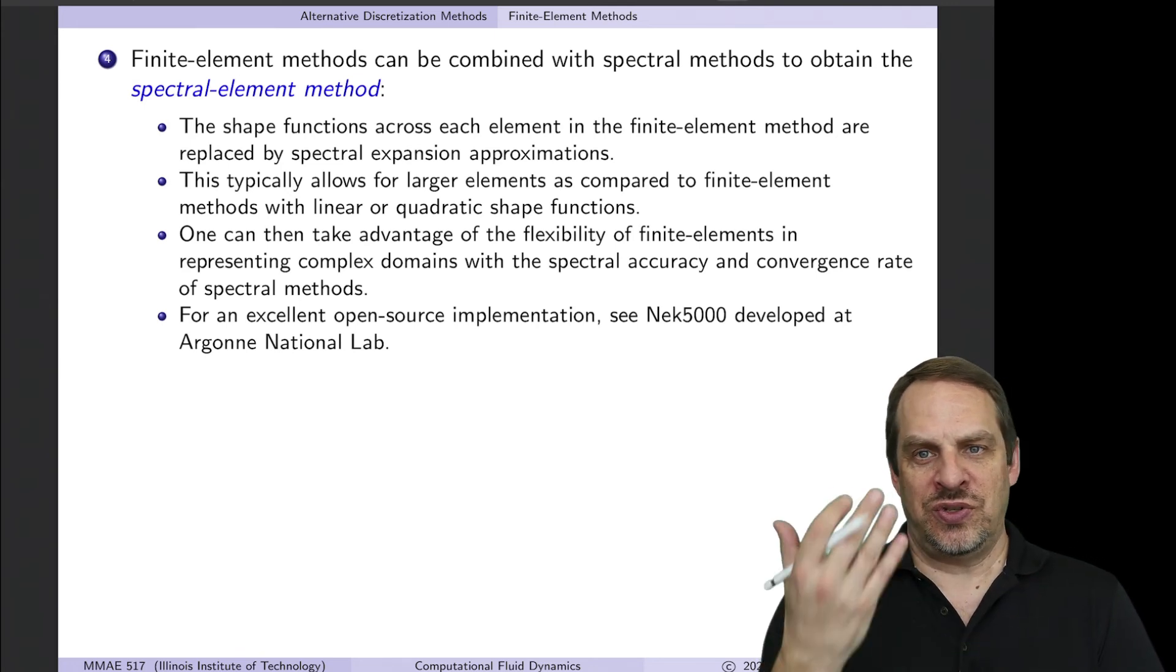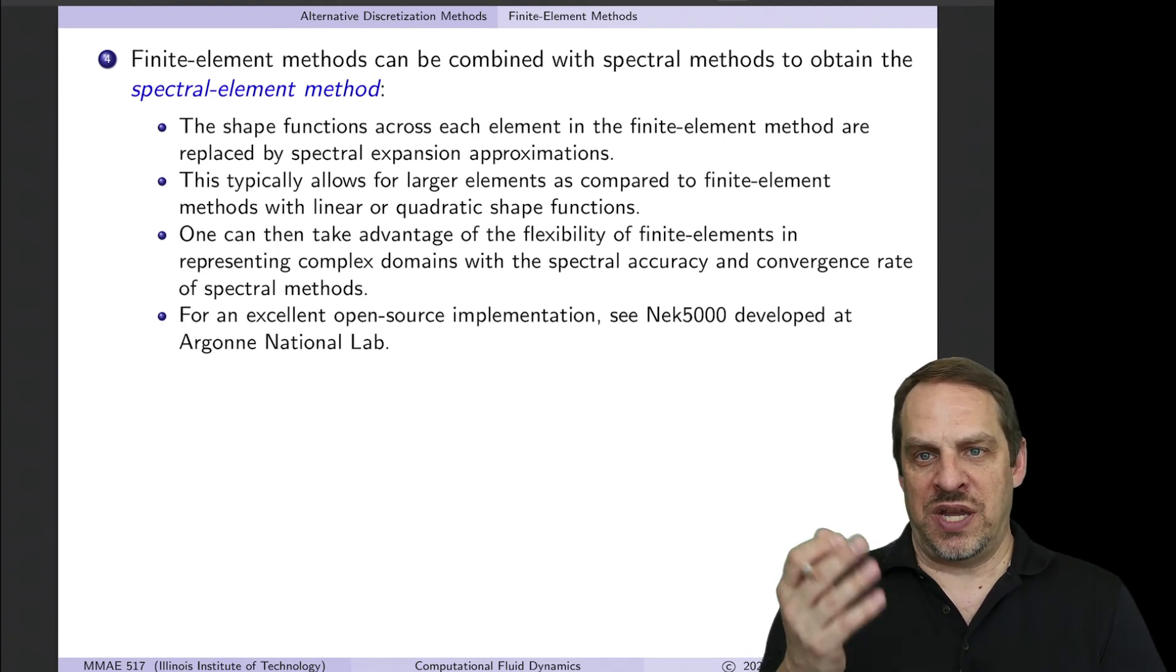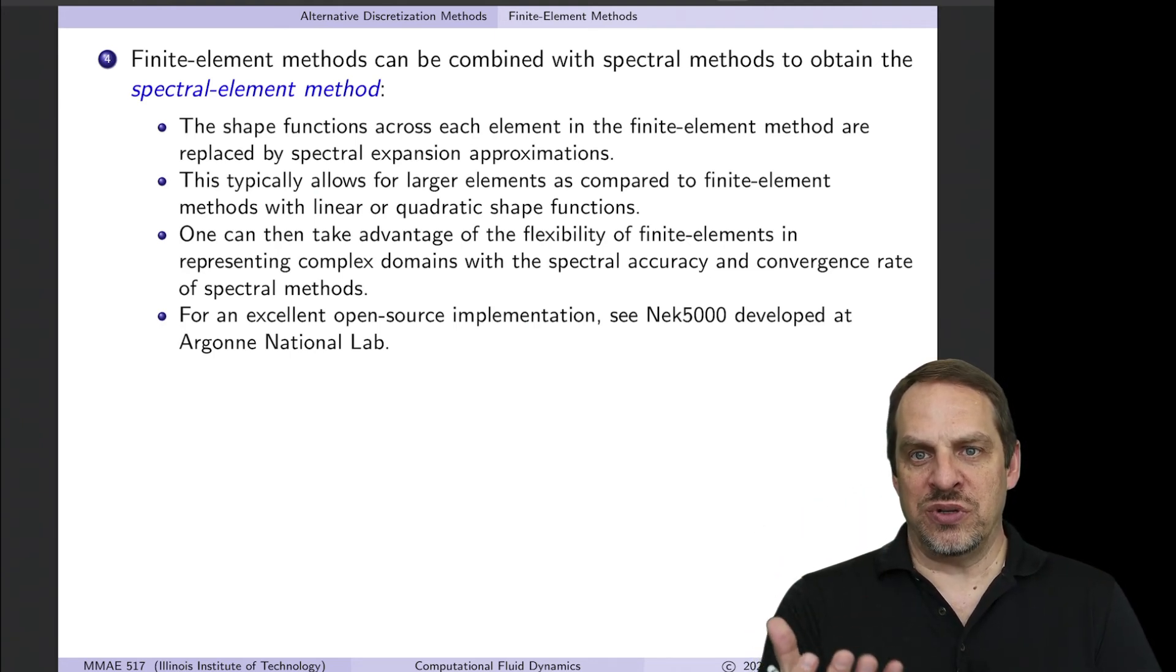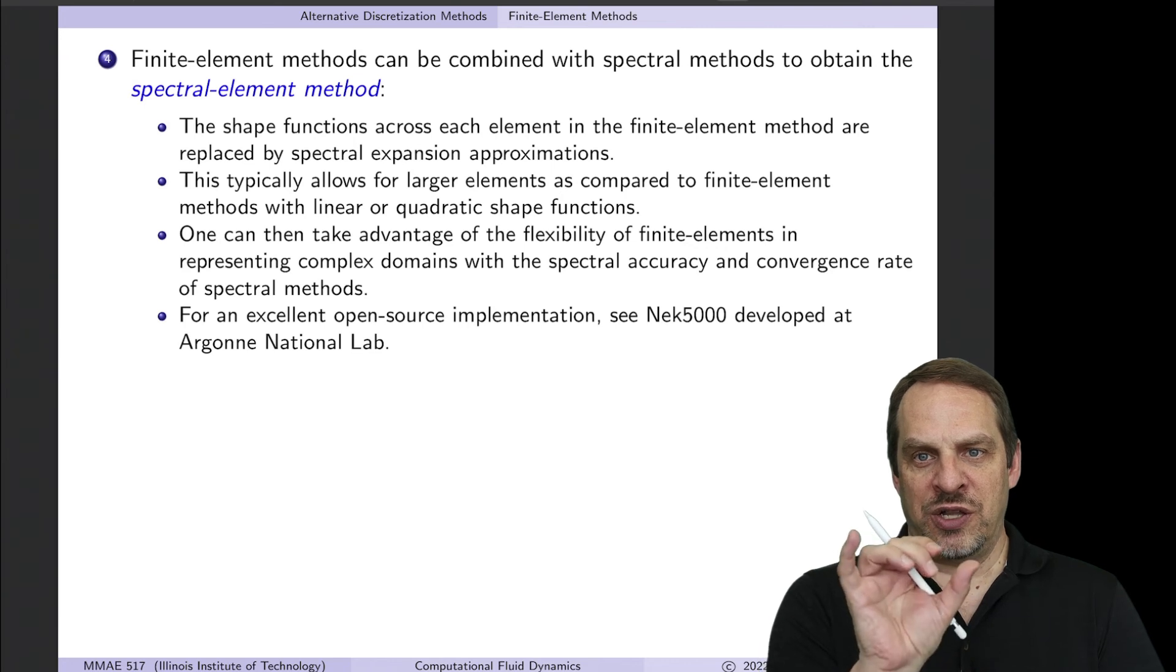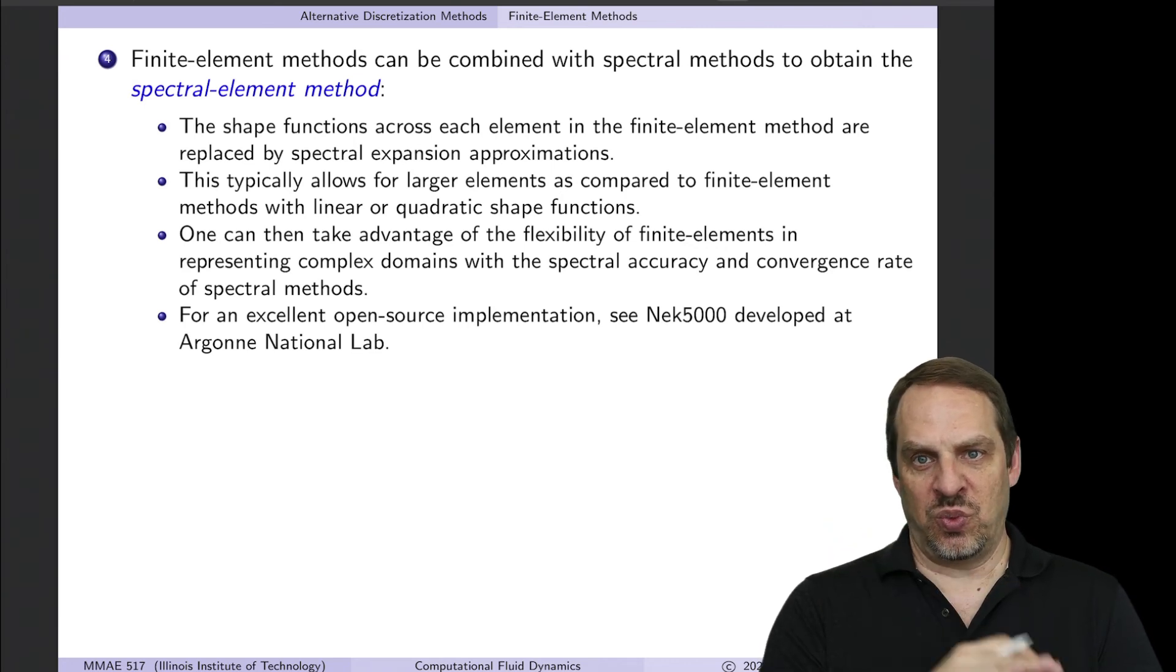And now you can choose capital N to be, say, 6, 7, 8, 9—the order of the polynomial that you're using over each element then is much larger than just one or two for linear or quadratic.